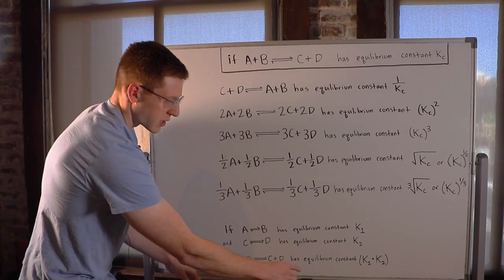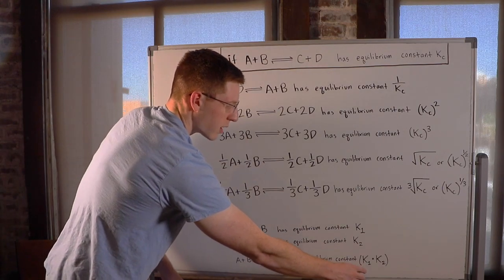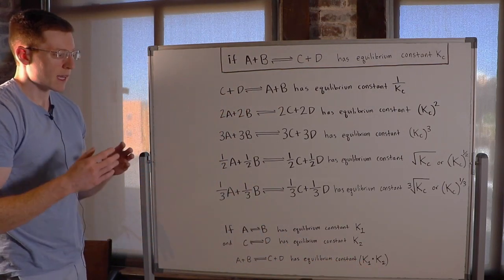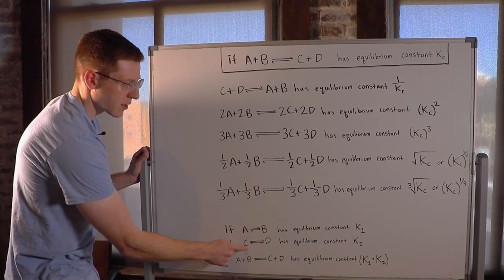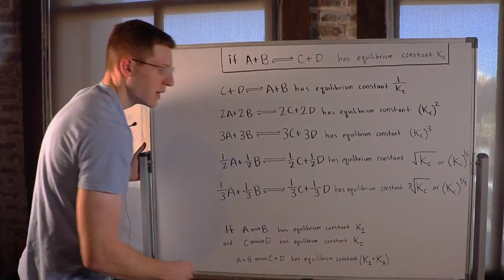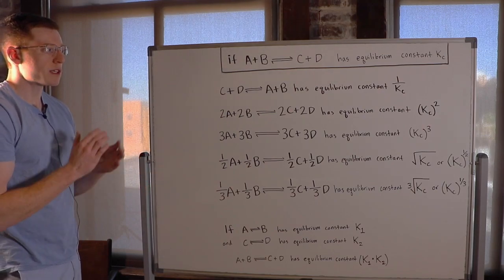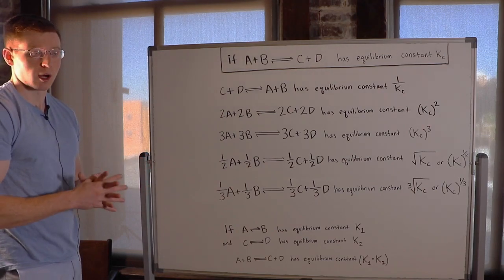the resultant reaction is going to have an equilibrium constant of K1 times K2. In other words, when you add reactions together, you have to multiply their equilibrium constants. So let's see how this information is useful in solving problems.